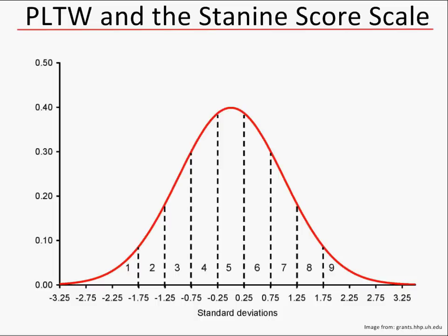The basis behind the STA-9 Score Scale is that all scores of student achievement are going to fall within a normal distribution. One of the benefits of using STA-9s is that we can assume that student scores and student performance will fall within that normal distribution — something I also discussed in the previous video. Once those scores are in the normal distribution, we can divide that distribution up into various segments.